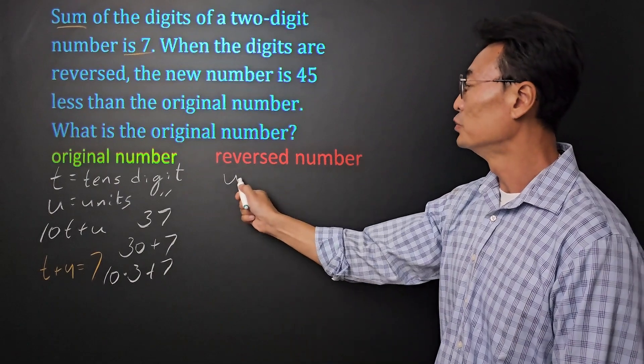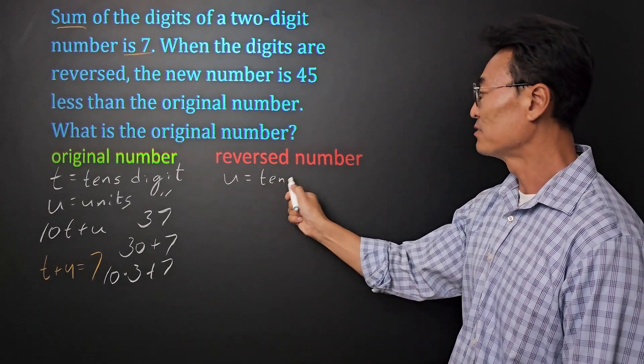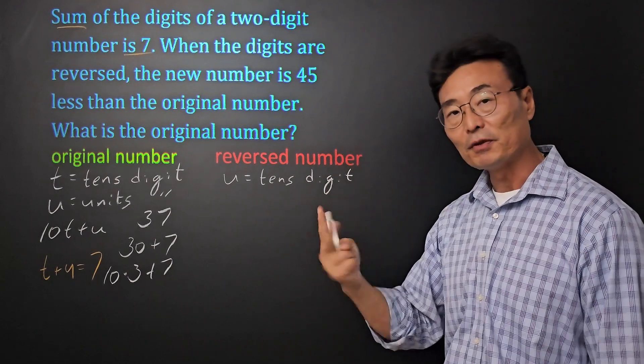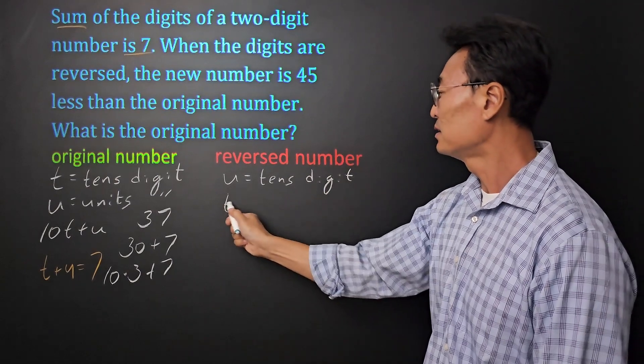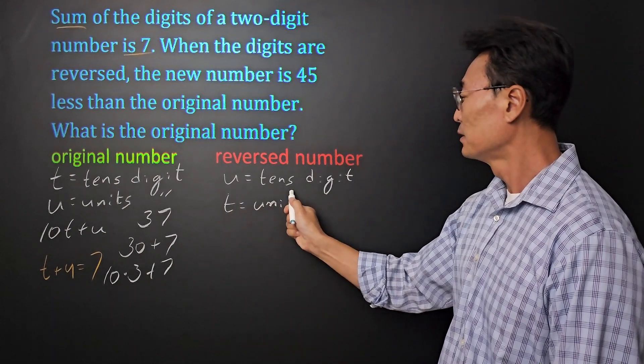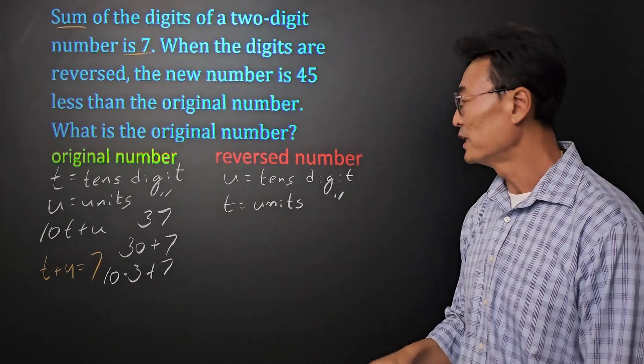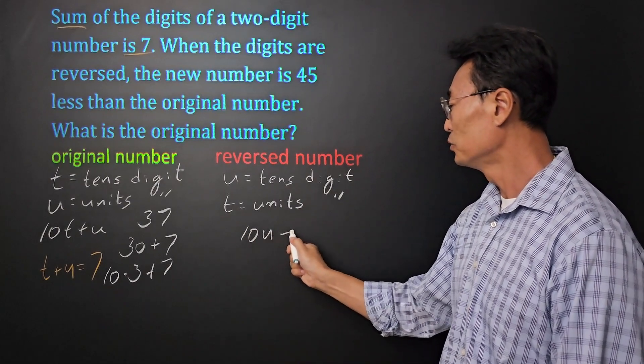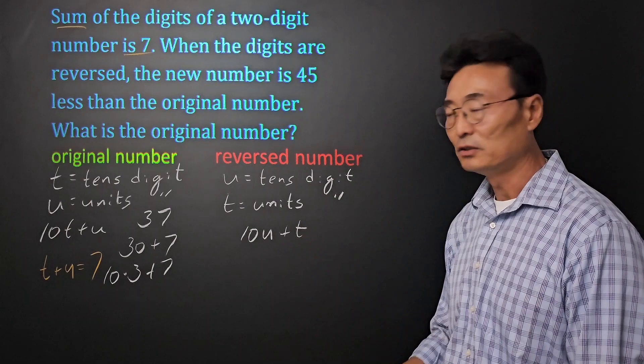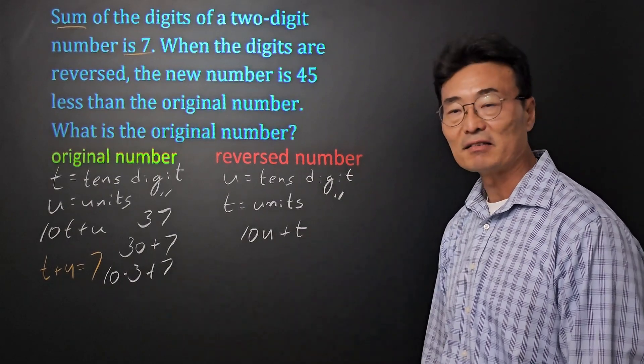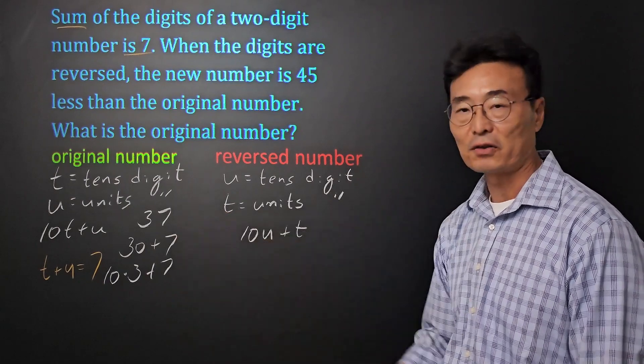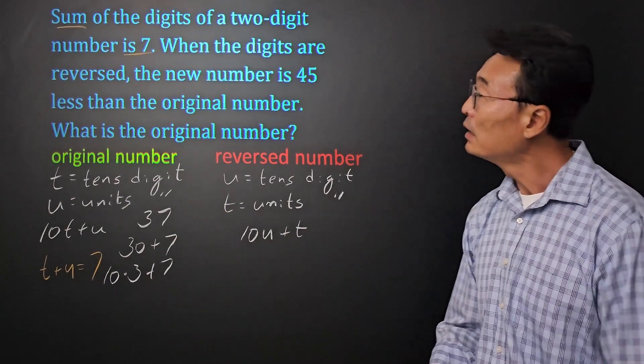Next, for the reverse number, it's going to be where u is going to be now our tens digit because we're going to be flipping the digits, and t will now be our units digit instead. So the reverse number will be 10u plus t, using the same reasoning as where we had the 10 times 3 plus 7 for the 37.